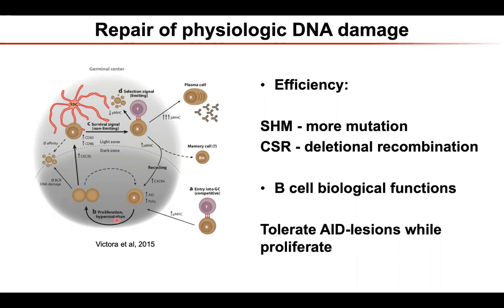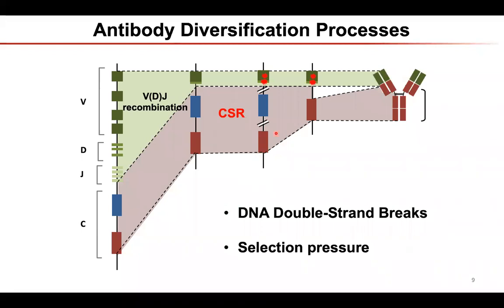Another important point is that whenever we initiate DNA repair, we also have to consider other biological functions of B cells. The cells have to tolerate these lesions — in germinal centers, B cells proliferate very fast, so the cell has to handle DNA repair on one hand while tolerating unrepaired lesions to proliferate and perform other immune cell functions. So today I want to share two stories: first, how class switch recombination happens in a deletional way.